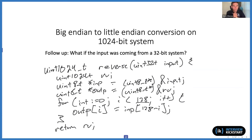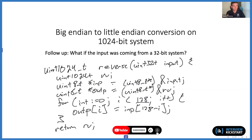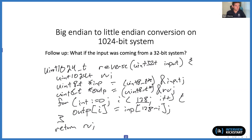The follow-up question was: what if the input is coming from a 32-bit system? Once again, the bit-size of the system doesn't really matter because endianness is associated with the object — the variable — not the architecture. There may be some nuances in implementing this on one system versus another, but on a 1024-bit system, all we need to do is reverse however many bytes that particular variable is supposed to consume in memory.